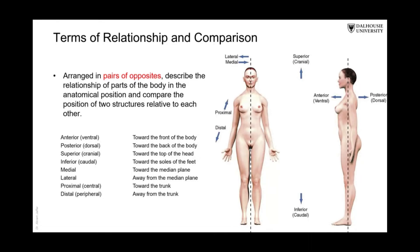Proximal and distal are usually used for the limbs. Proximal is closer to the root of the limb and distal is away from the root. For example, the elbow joint is proximal to the wrist joint, and the wrist joint is distal to the elbow joint. The elbow joint is distal to the shoulder joint. The same is true for the lower limb — the knee joint is distal to the hip joint.